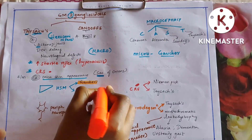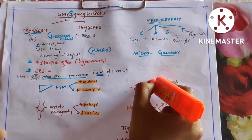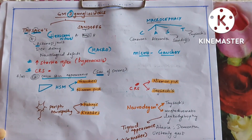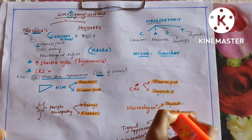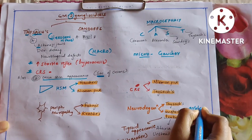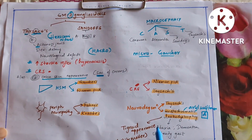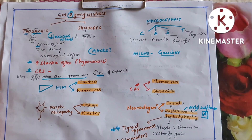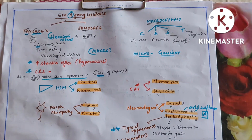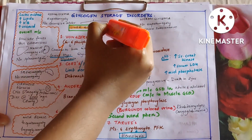Let us discuss diseases categorized by symptoms. Peripheral neuropathy: Fabry's and Krabbe's. Cherry red spot: seen in both Niemann-Pick and Tay-Sachs. Neurodegeneration: Tay-Sachs and metachromatic leukodystrophy (MLD). MLD is due to arylsulfatase A deficiency and gives tigroid appearance in white matter; presents with ataxia, dementia, and unsteady gait. In Niemann-Pick you see hepatosplenomegaly, but in Tay-Sachs you do not — Tay-Sachs has tiny liver.